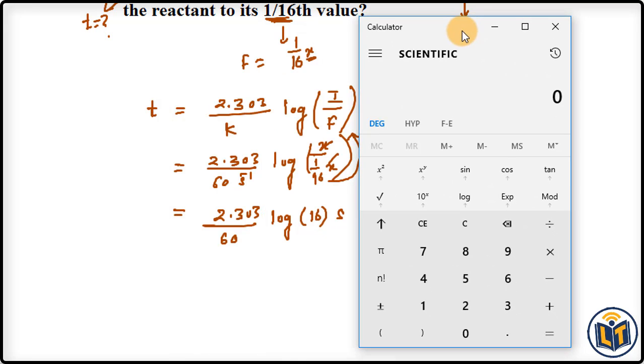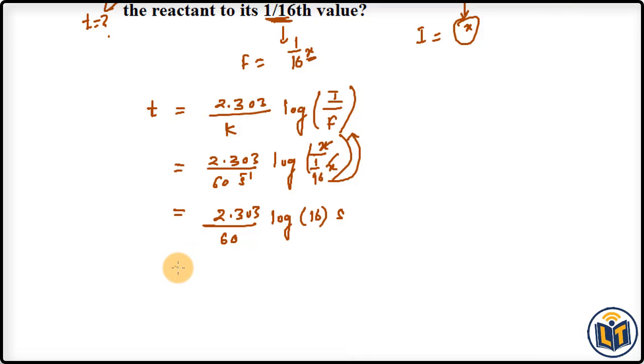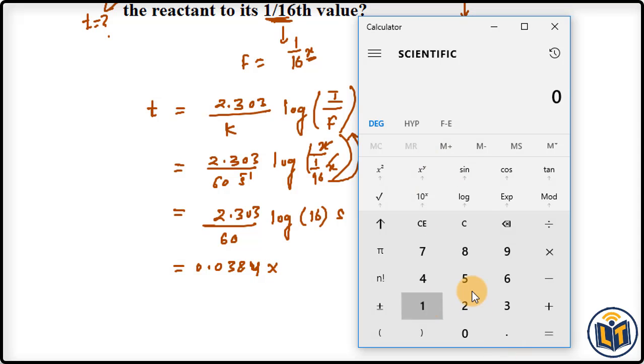We can do the calculation. 2.303 divided by 60 gives us 0.0384. Here we have 0.0384 multiplied by log 16. The log value of 16 is 1.204, so we have 1.204, and the unit is seconds.